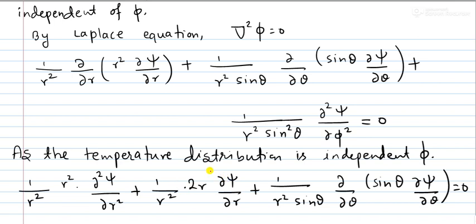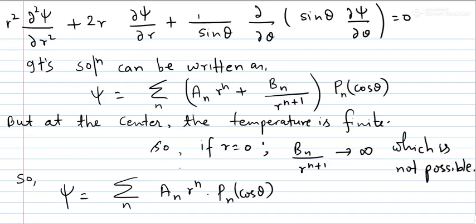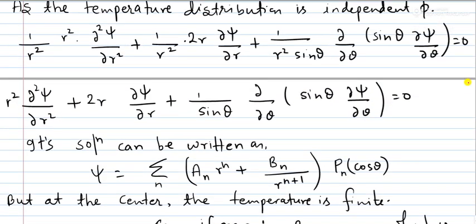From the Laplace equation, ∇²ψ = 0. We write the Laplacian in spherical coordinates: (1/r²) ∂/∂r(r² ∂ψ/∂r) + (1/r² sinθ) ∂/∂θ(sinθ ∂ψ/∂θ) + (1/r² sin²θ) ∂²ψ/∂φ² = 0. Since φ is independent, we can ignore the last term. Applying the product rule and multiplying through by r² gives us the simplified form with two r and (1/sinθ) ∂/∂θ(sinθ) terms.